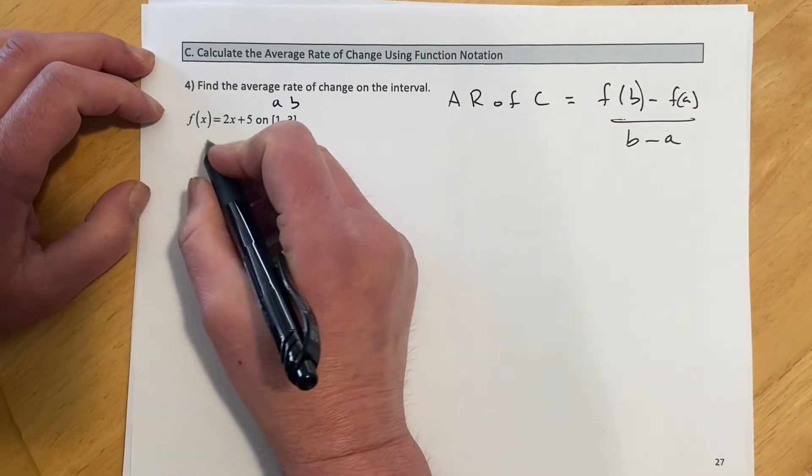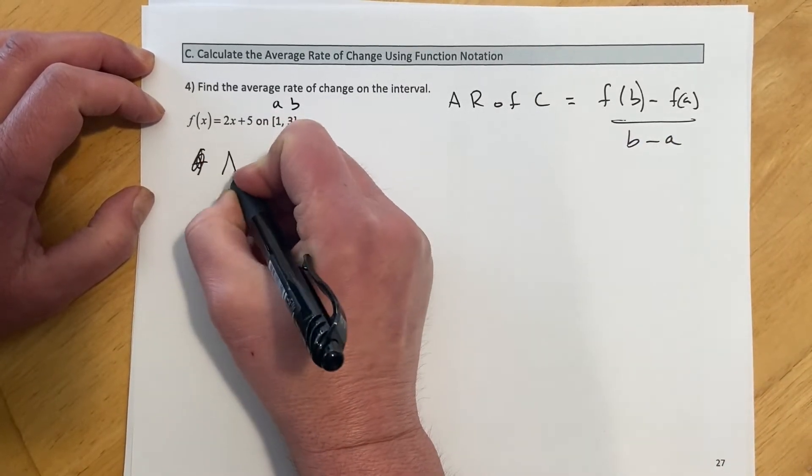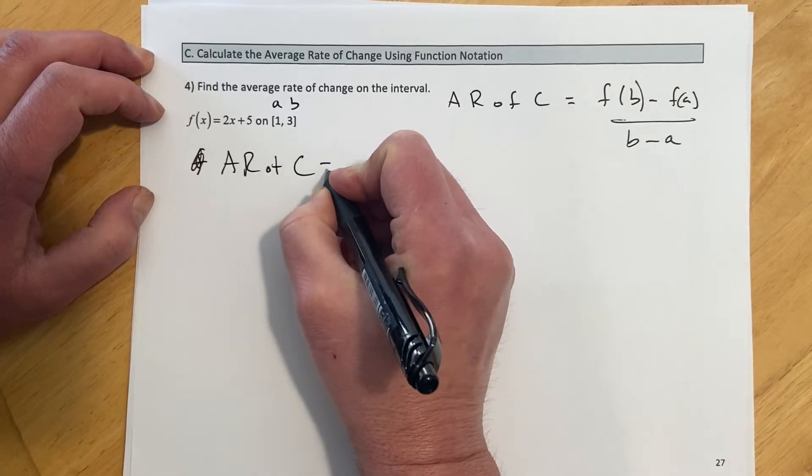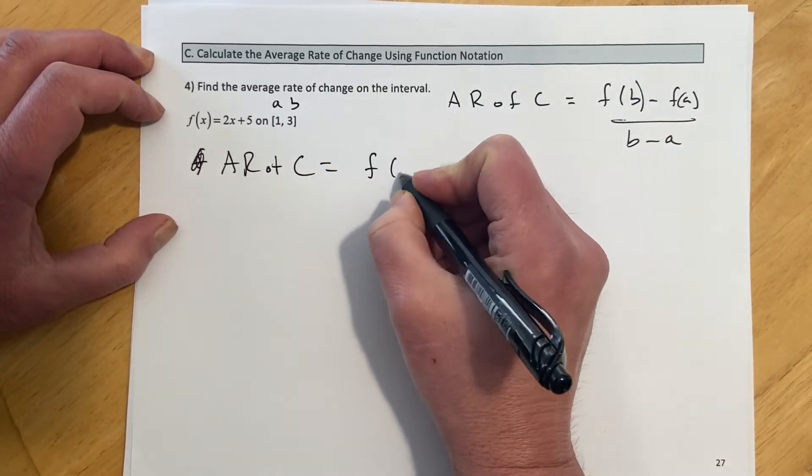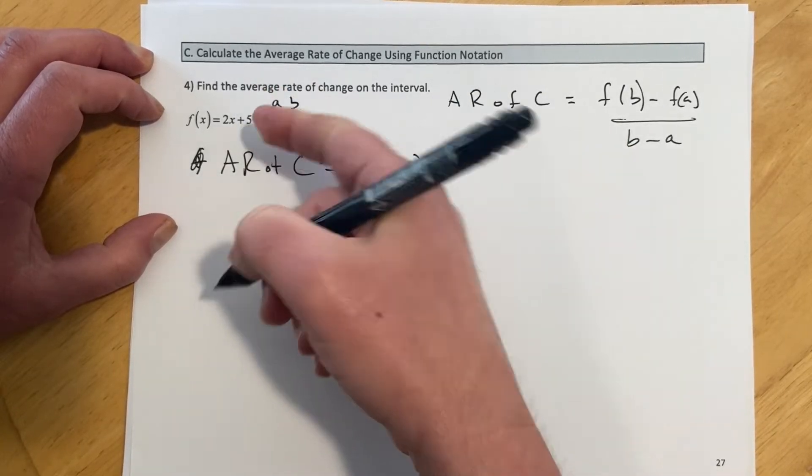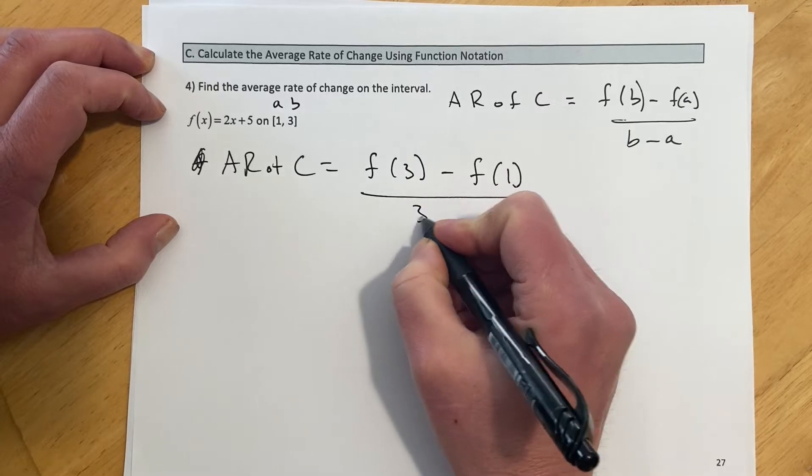And so let me write this out, what we're going to do. Let me write average rate of change equals, and now f(3) minus f(1) over 3 minus 1.